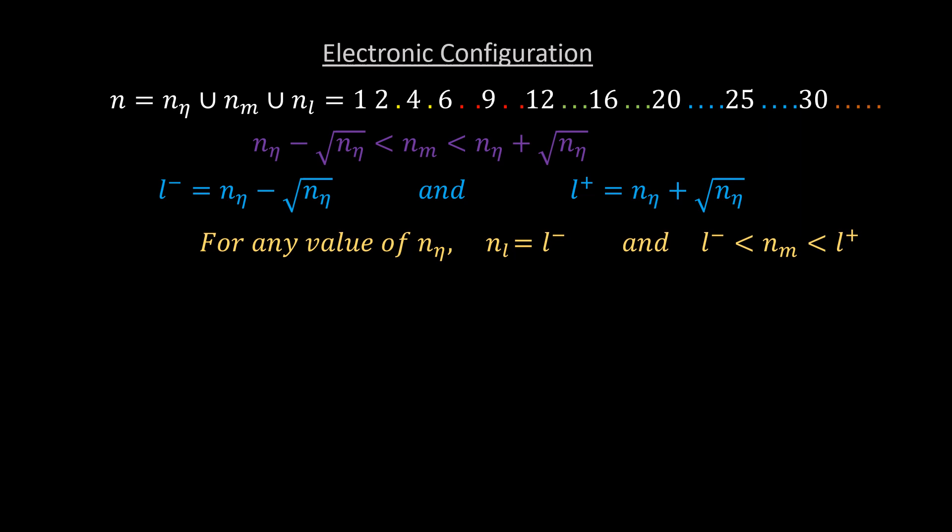In terms of the quantum numbers eta, l, and m, the rule is as follows. For any value of the principal quantum number eta, the momentum quantum number is eta minus 1, and the magnetic quantum number m lies between negative and positive l. I am sure you recognize this version. It is the same rule for assigning quantum numbers in atomic physics and chemistry.